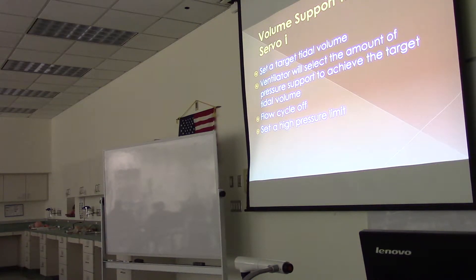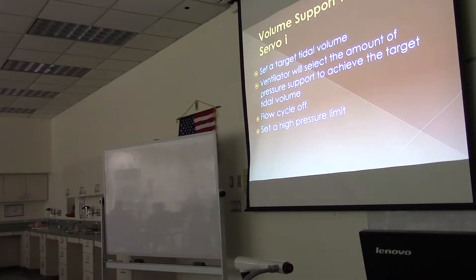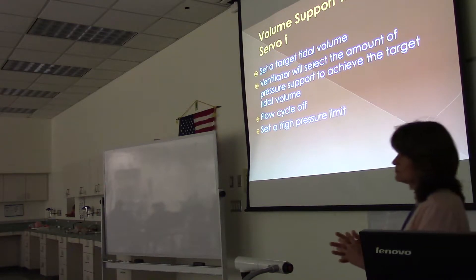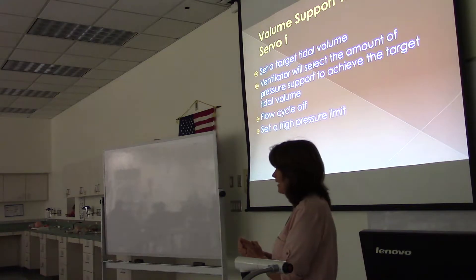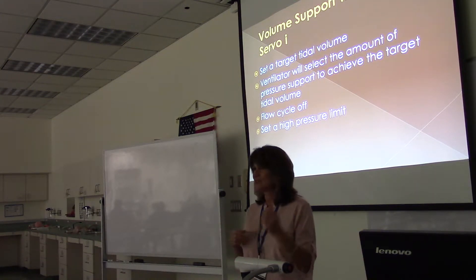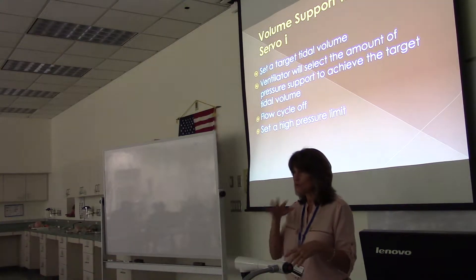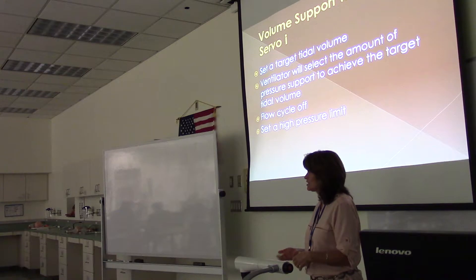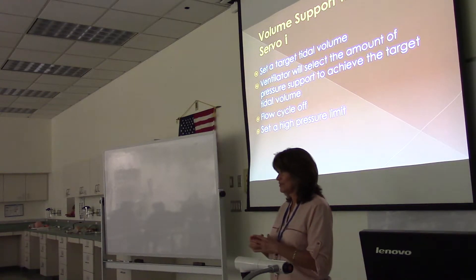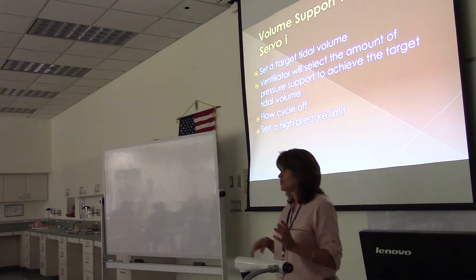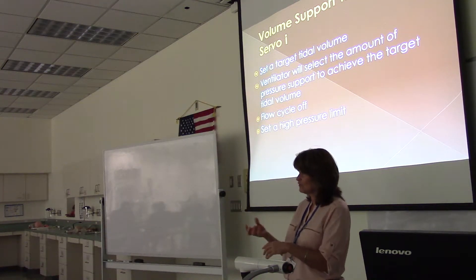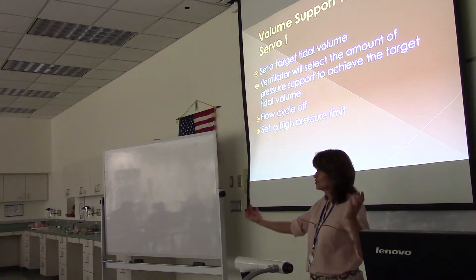You set a target tidal volume; the ventilator will select the amount of pressure support to achieve the target tidal volume. You have to set flow cycle off and you have to set a high pressure limit. What does the flow cycle off do? It ends the breath. So the volume support breath ends when flow diminishes — that's how the ventilator knows the patient is done breathing in. Sometimes their inspiratory times are really long, so we can change the flow cycle off to make the breath end a little bit sooner so they don't have such long I-times.